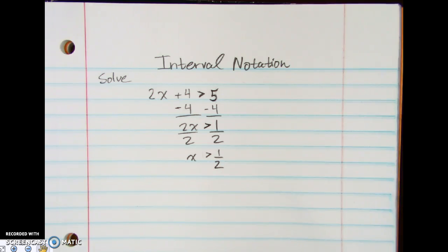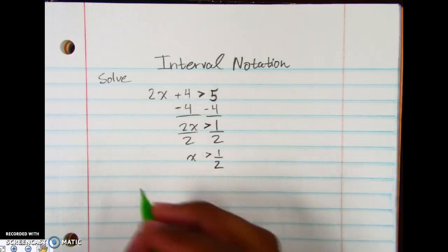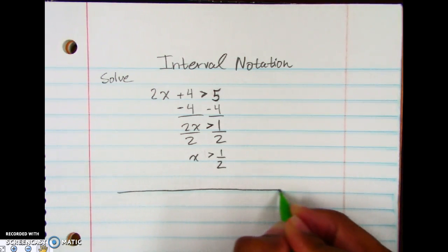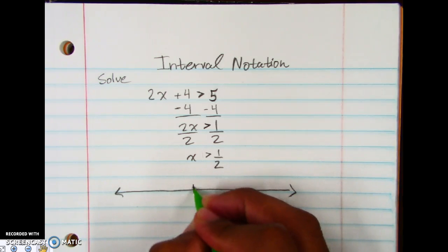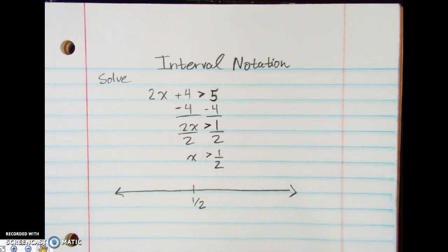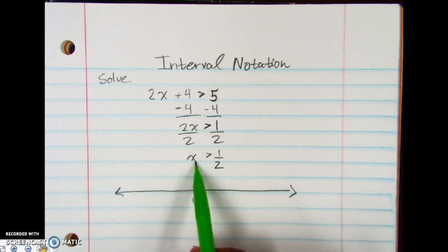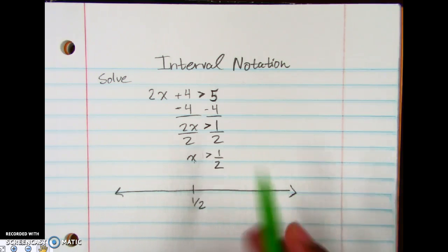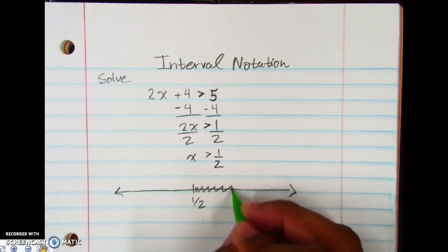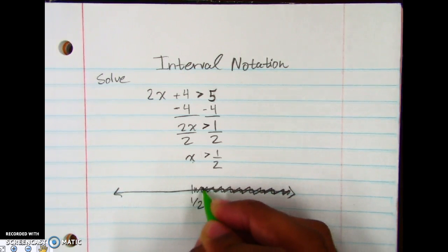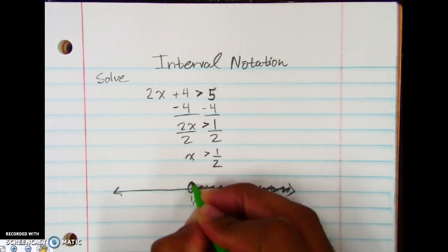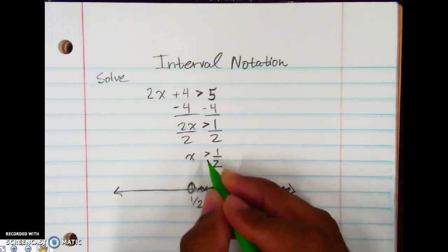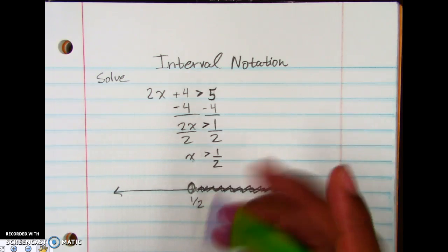Now hopefully you remember back from your other math classes when you originally learned this. We would do a number line. And then we would do all these tick marks and everything. So I'm going to make this easier. I'm just going to put a tick mark there and say 1 half. And then we had to do the shading part and see which side to shade on. And since x is greater than 1 half, we're going to shade on this side. That's all the numbers are bigger than 1 half. And before, we used to use an open circle there.